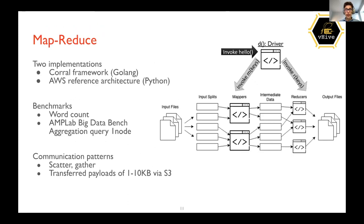The next function is MapReduce, a classic analytics function. It has two implementations — one in Golang using a Coral framework developed by one of the engineers, and also a Python implementation from AWS, which is their reference architecture for MapReduce. The easiest benchmarks to use are word count in both cases, and also the Ampla Big Data Bench aggregation query — a one-node dataset used in academic database performance evaluation.